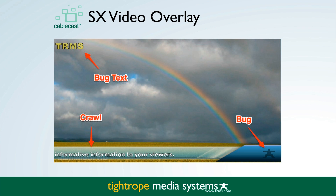A bug text is a static piece of text that goes in one of the four corners. It's associated to the run of whatever show is currently on the air, so that data can change for each program your station is airing. The bug is part of your channel style and only changes when your channel changes.